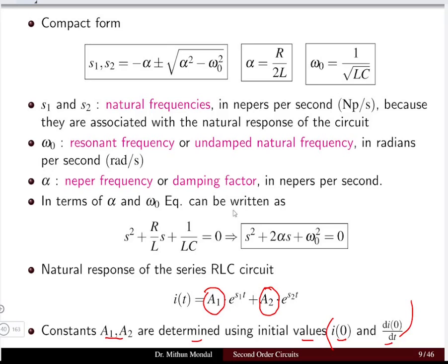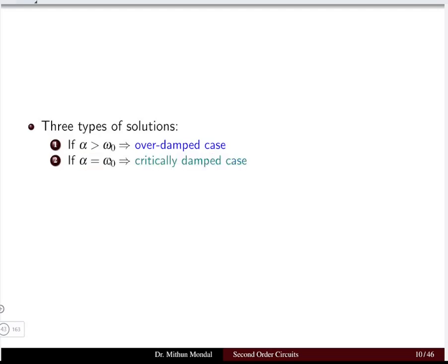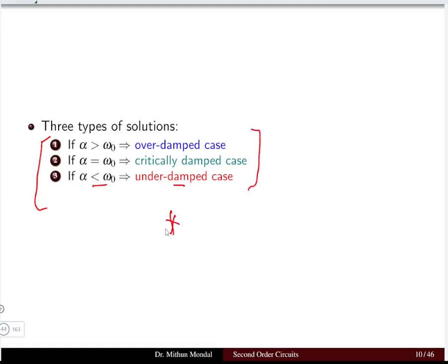The three cases are: if α > ω₀, the system is over-damped; if α = ω₀, it is critically damped; and if α < ω₀, it is under-damped. These three cases are very important for a series RLC network, and when we solve problems we determine which type of solution applies.